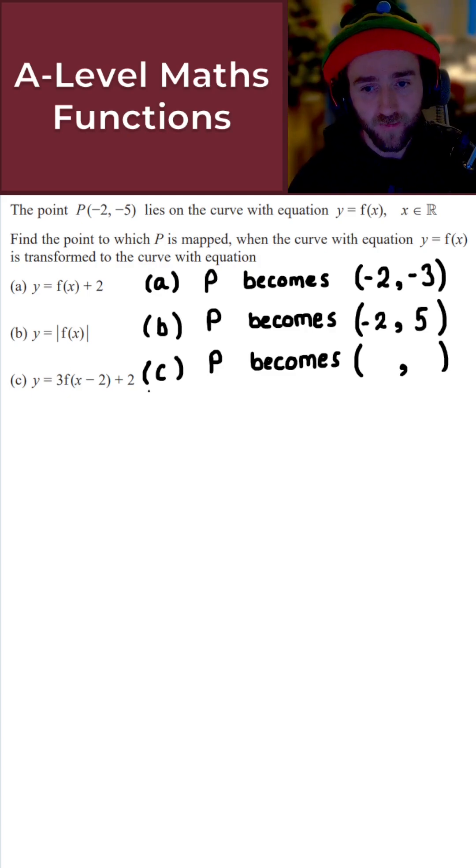Now I've got the vertical translation of +2, as we saw in part A. So if I've got -15 and I add 2 to that, I get -13 for the y-coordinate. For the x-coordinate, we've got this horizontal translation. Just be careful, it's x - 2. The mistake is to subtract 2 from the x-coordinate, but we have to do the opposite.